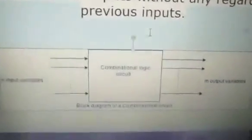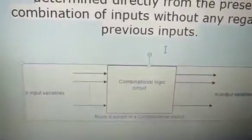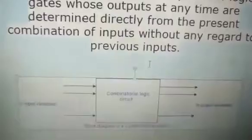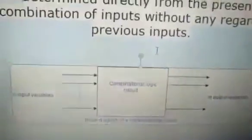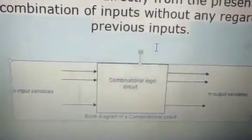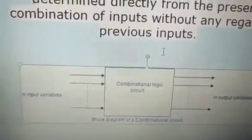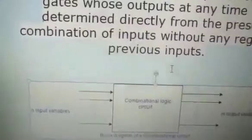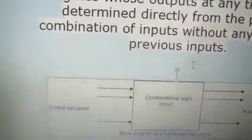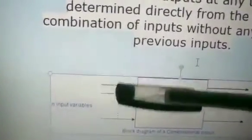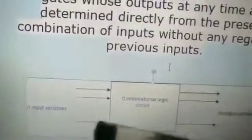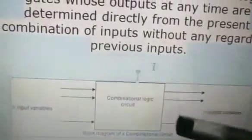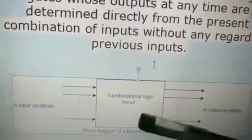This is the block diagram. For each and every combinational circuit you have to mention the block diagram. This square box represents that it is a combinational logic circuit. The arrows represent that there are n number of inputs we can give to the combinational circuit, and depending upon the n number of inputs we can get m number of outputs through this circuit.